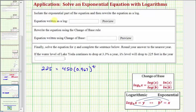Now for our next step, we want to isolate the exponential part of the equation, then rewrite the exponential equation as a logarithmic equation. So we want to isolate 0.967 raised to the power of t. To do this, we'll have to divide both sides by 450. And 225 divided by 450 is 0.5 or one-half. So we have 0.5 equals 0.967 raised to the power of t.